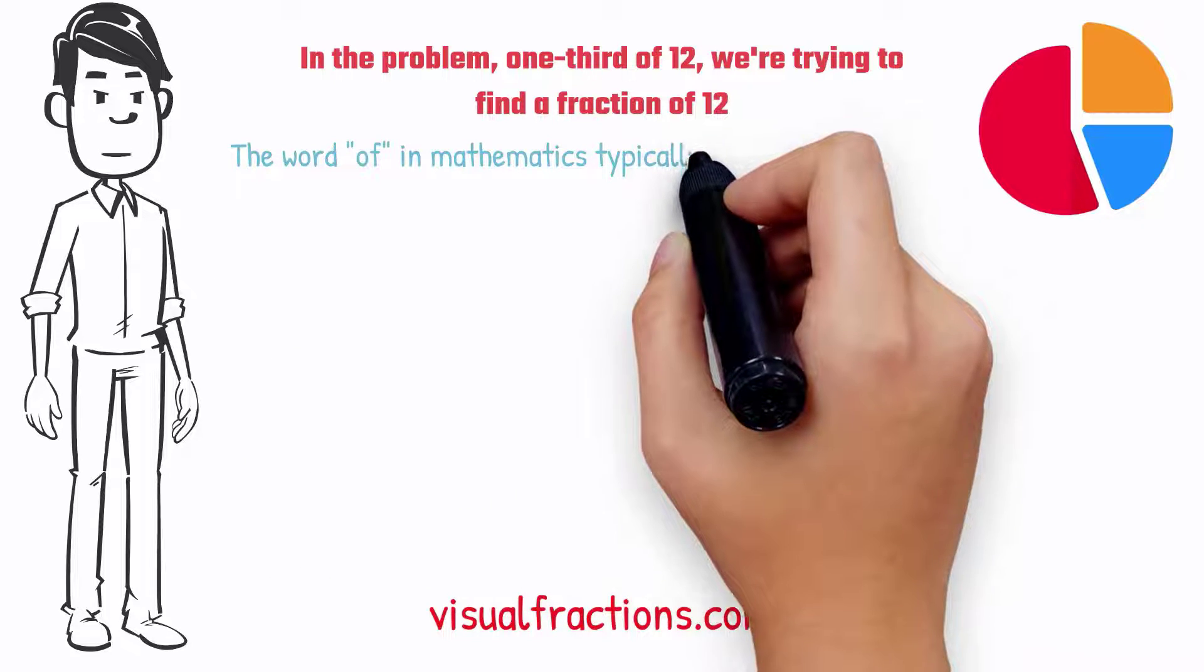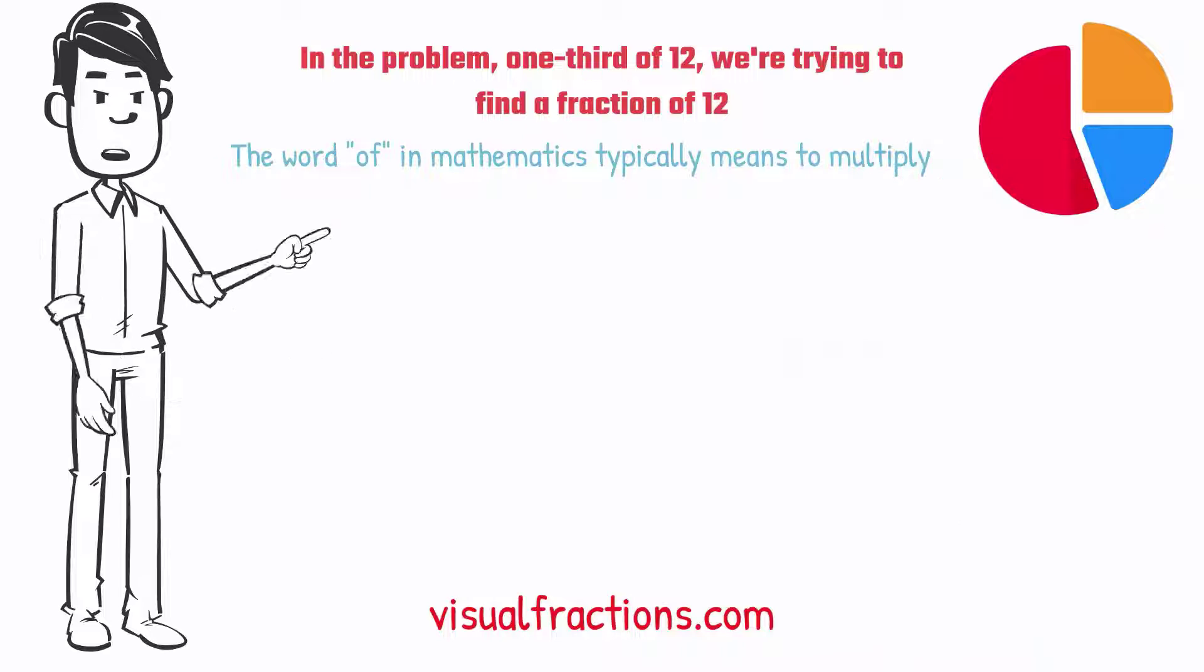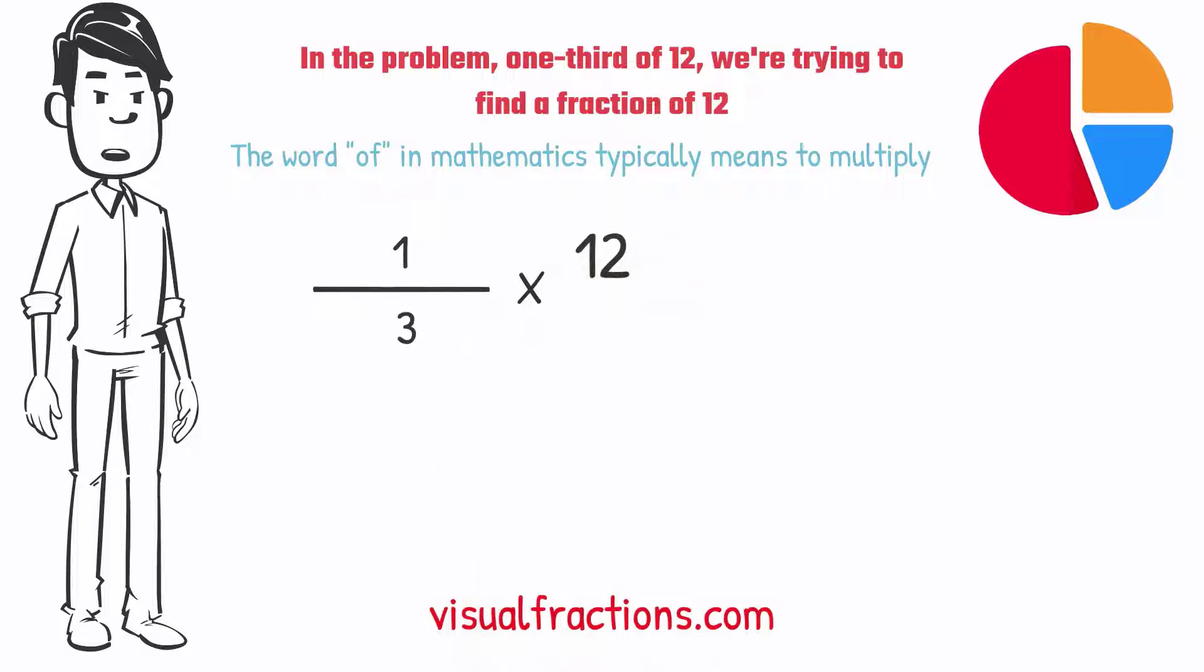The word 'of' in mathematics typically means to multiply, so we rewrite our problem as multiplication, one-third times 12. To simplify the calculation, we first convert our whole number into fraction form, writing 12 as 12 over 1.